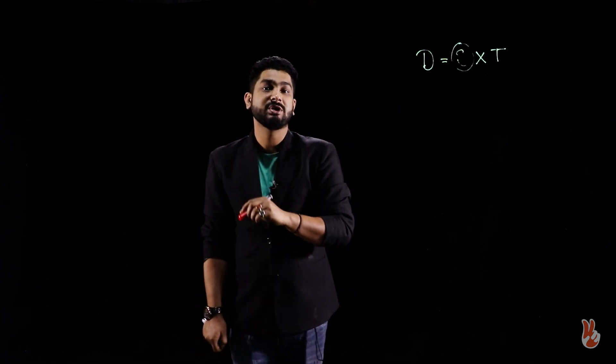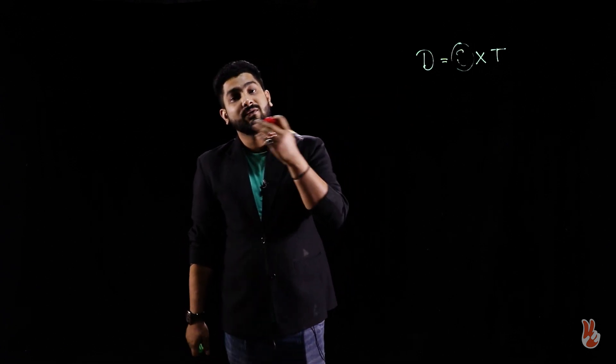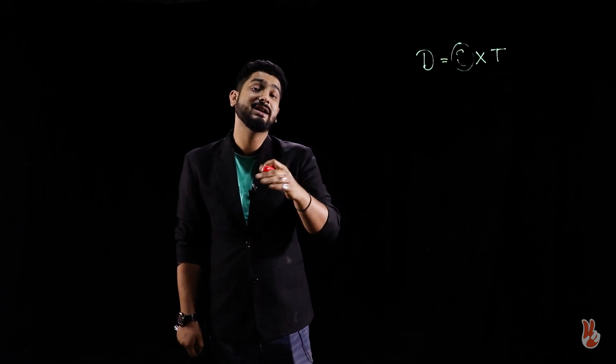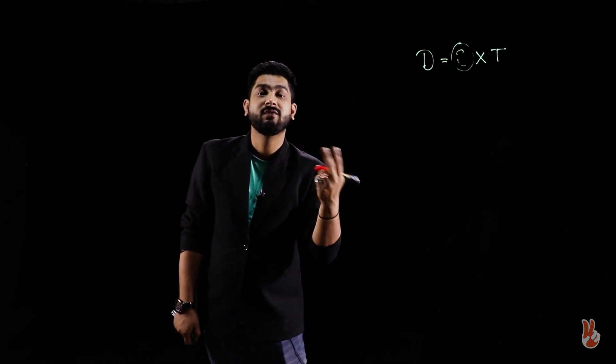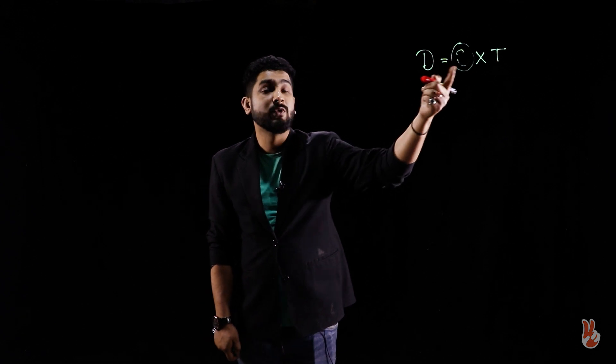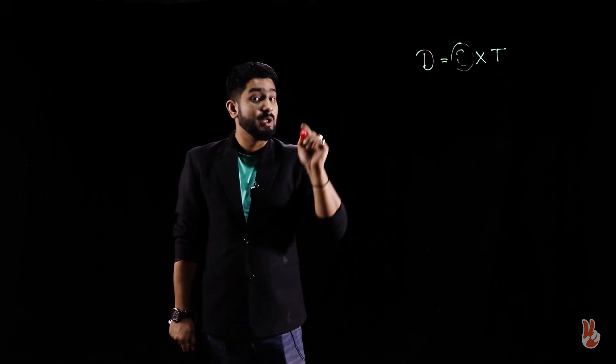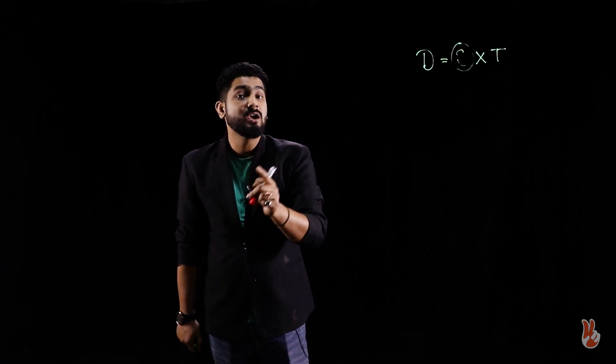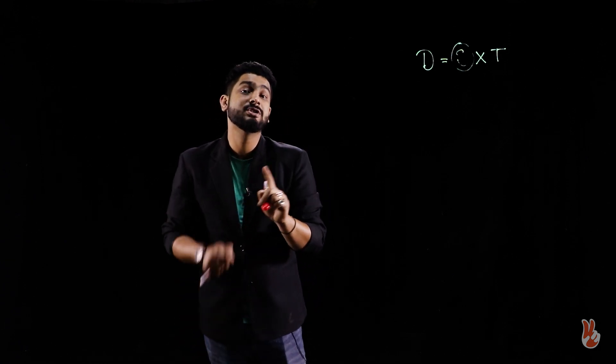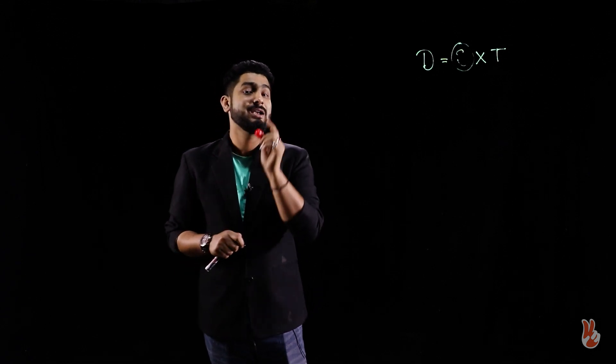Now the question says there is one train at 40 kilometers, the other train has 50 kilometers traveling for two hours. Now will you use 40 here? Will you use 50 here? Point is none. One formula, you cannot put two values here. You have to combine the values and make it one. How to do that? I'll show you that.